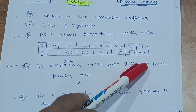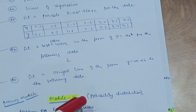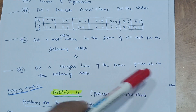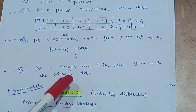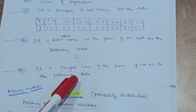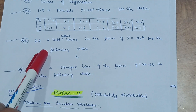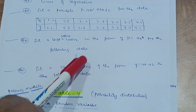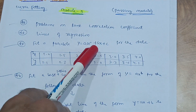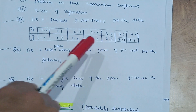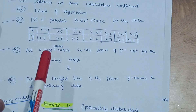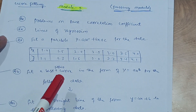The third variety is: fit a straight line of the form y = ax + b to the following data. So the three possibilities are a straight line fit, a best-fitting curve in the form y = ax^b, and a parabola y = ax² + bx + c. These will be the definite questions, so focus on these concepts. This much content is enough to cover Module 3.